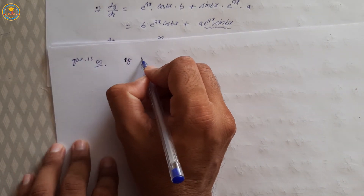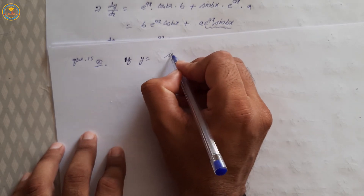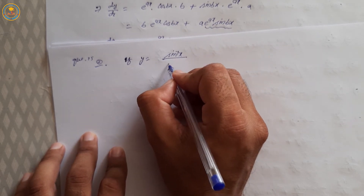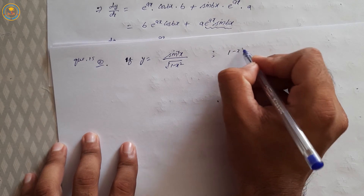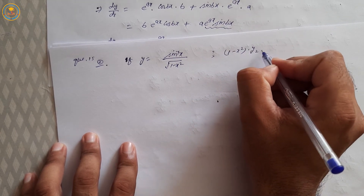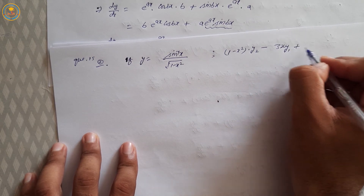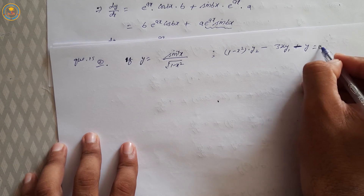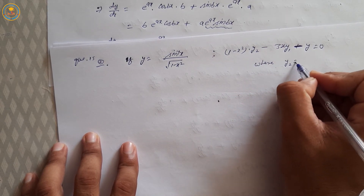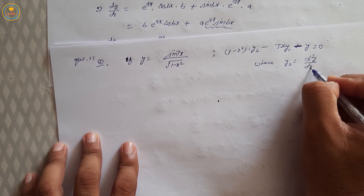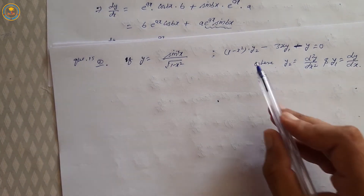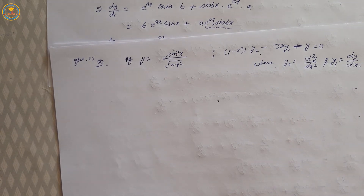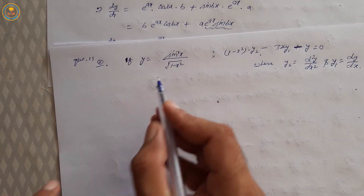If y = sin⁻¹x / √(1 − x²), then prove that (1 − x²)·y₂ − 3x·y₁ − y = 0. Here y₂ = d²y/dx² and y₁ = dy/dx.